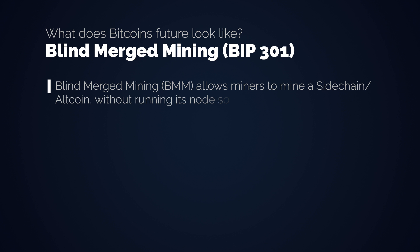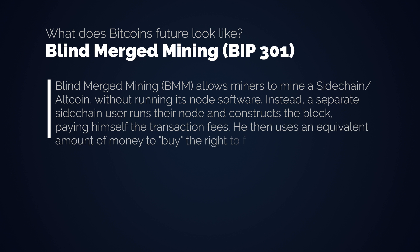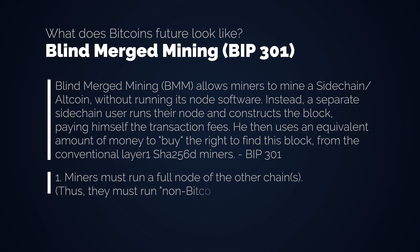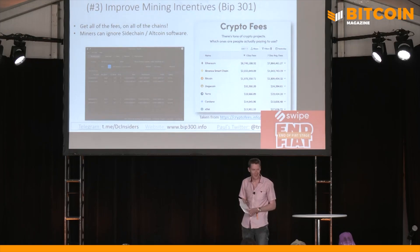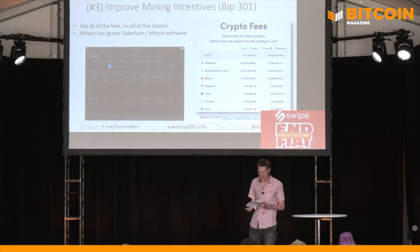Now let's continue with BIP301, the next one — it's about blind merged mining. Blind merged mining allows miners to mine a sidechain or altcoin without running its node software. Instead, a separate sidechain user runs their node and constructs the block, paying himself the transaction fees. He then uses an equivalent amount of money to buy the right to find this block from the conventional Layer 1 SHA-256 miners. Regular merged mining requires miners to run a full node of the other chains, running non-Bitcoin software which may be buggy, and miners are paid in alt currencies. With blind merged mining, a miner can collect fees on all other chains without any additional software. Combined with Drive Chains bringing all coins on top of Bitcoin, this increased miner incentive could potentially maintain the hash rate security of the network in the long run — which is frankly a big deal.